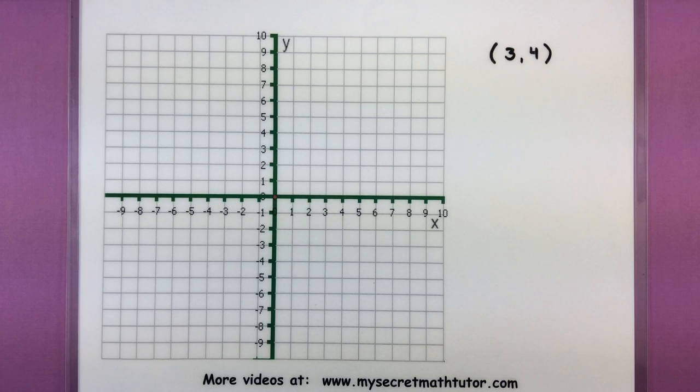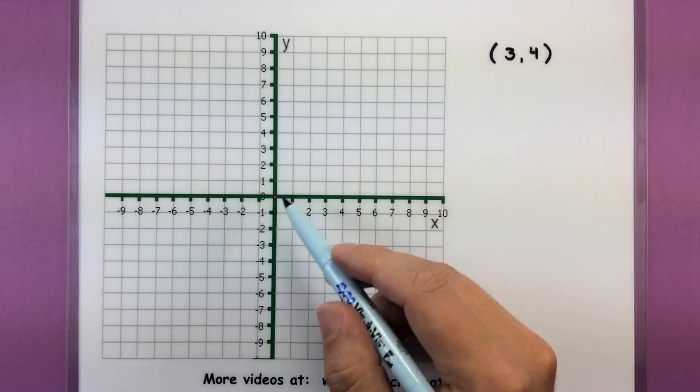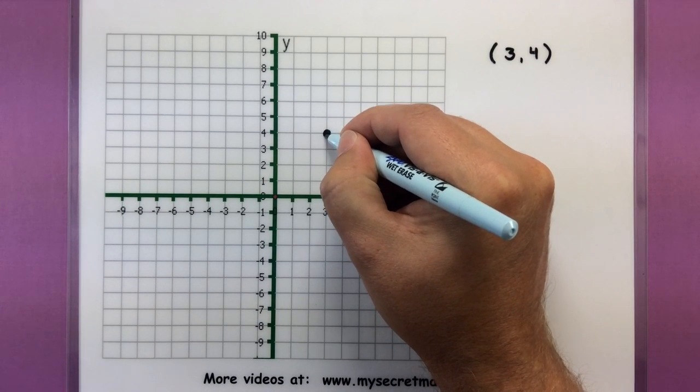So for this first one we're going to start off with a point (3,4). So really what I want to do is locate that on my coordinate axes just like that.